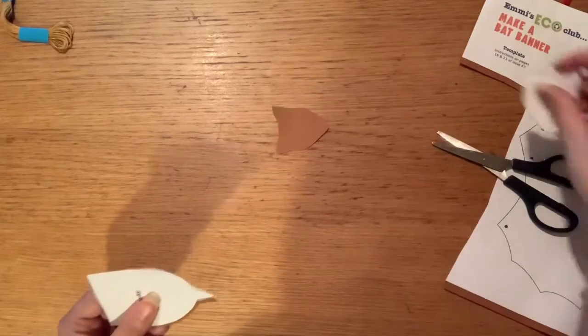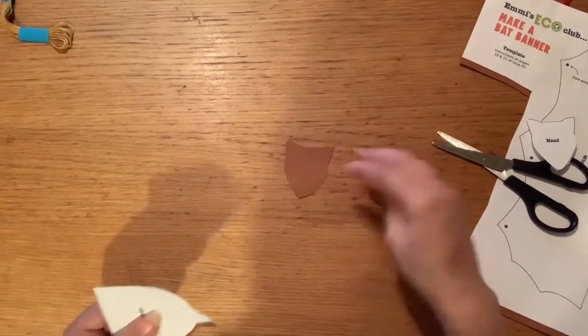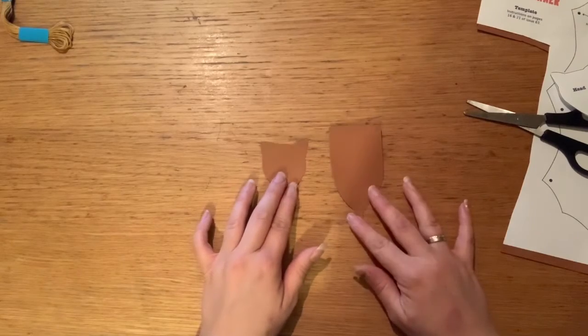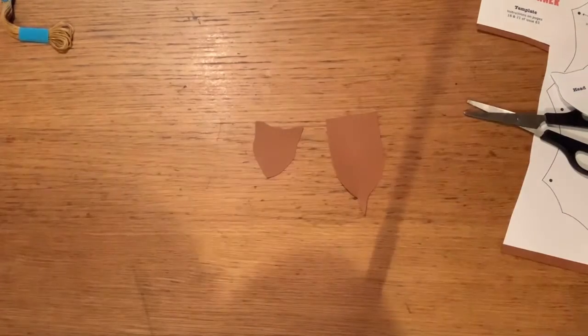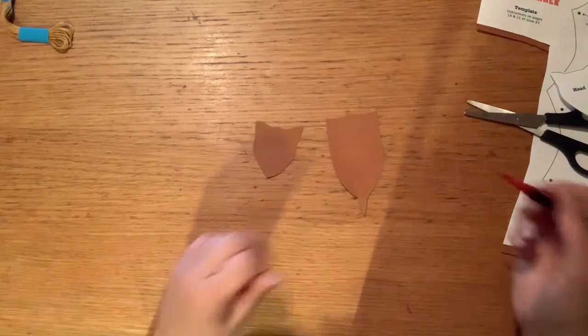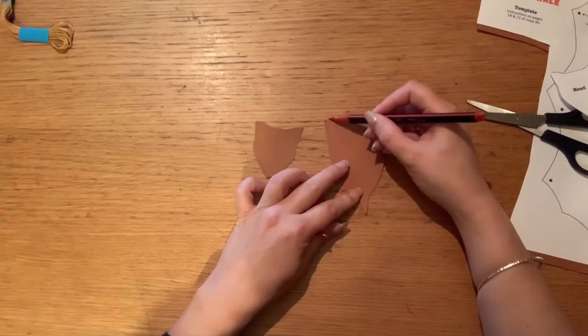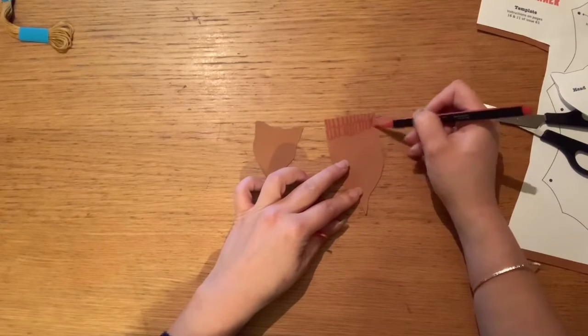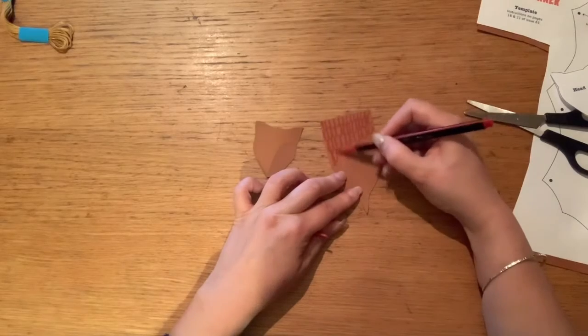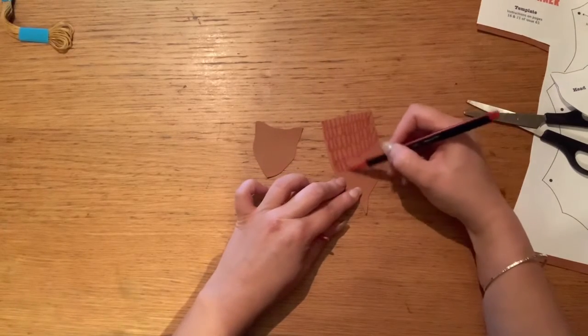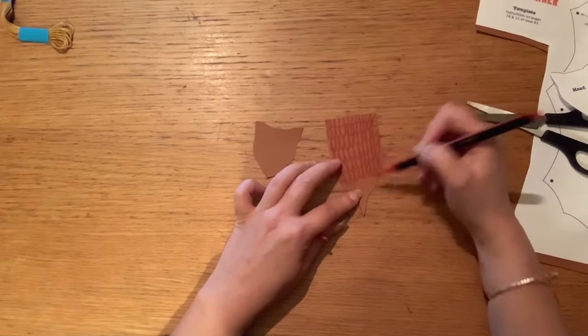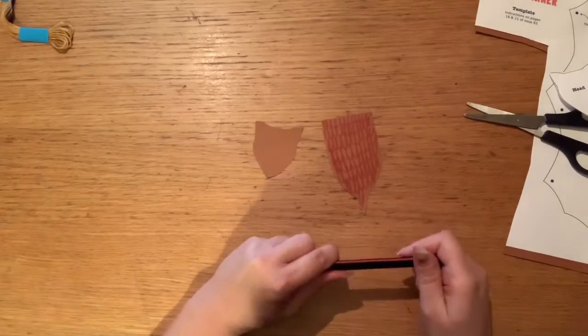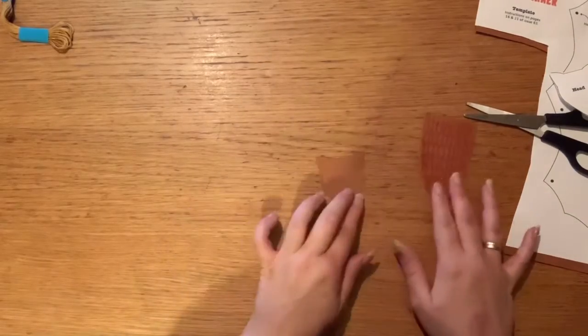If not, maybe you could draw around it or you could get mummy or daddy to draw around it. Or if you want to be really demanding and lazy, you could just ask mummy and daddy to cut these pieces out for you and have it pre-cut. Personally, that's what I might do. If Martha asked me to do that, I'd say, no way. But you might get away with it. So, there we go. Let's get rid of those bits. So we have a head. It looks a bit like a fox's head as well, doesn't it? A bat's head and a bat's body.